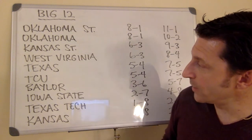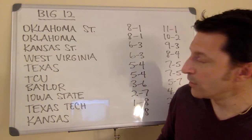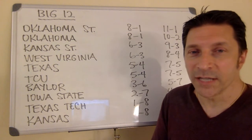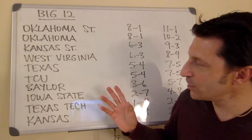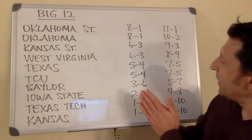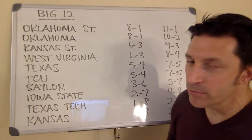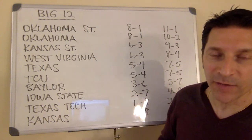Tom Herman at Texas, of course, taking over the Longhorns program after success at Ohio State and at Houston. The Longhorns are going to have their issues, but get finally back to a winning record for the first time in four seasons at 7-5.